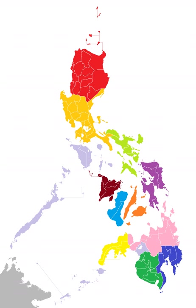In 1940, the constitution was amended to allow one re-election, but with the term shortened to four years. This setup was first used in the second election in 1941, with Quezon being re-elected.